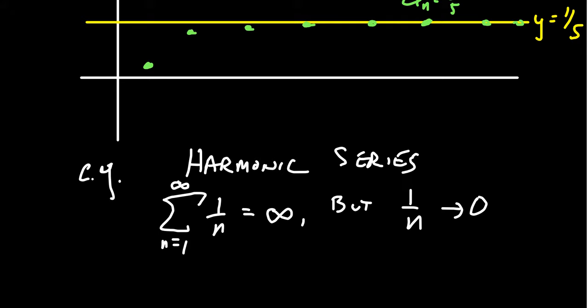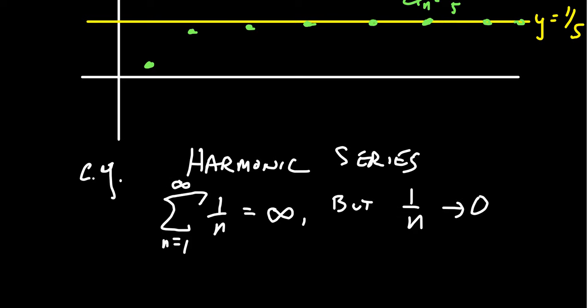One thing to be aware of with the divergence test is that it can only show divergence — it can never be used to show that a series is convergent. That's a very important distinction. As we learn about more convergence tests in the future, we might need them to show convergence. The divergence test is a very nice, quick test to show when a series is divergent. If you're wondering how we know the harmonic series is divergent, in lieu of the integral test — which we'll talk about in the not-too-distant future — we will postpone that conversation until we discuss the integral test in a future lecture.